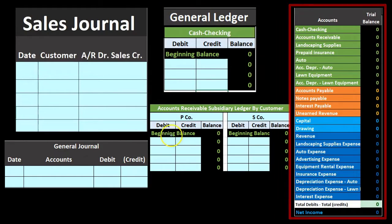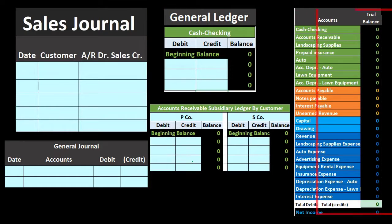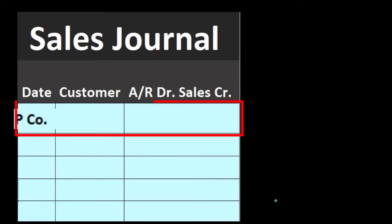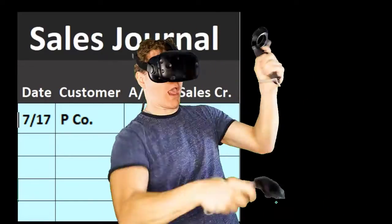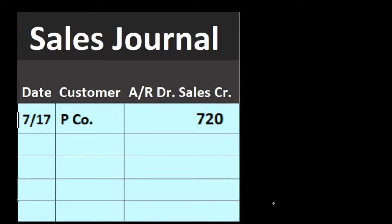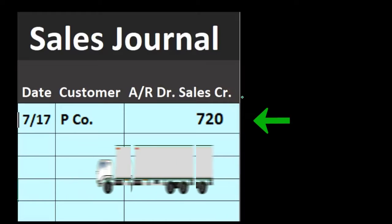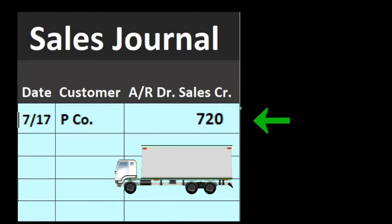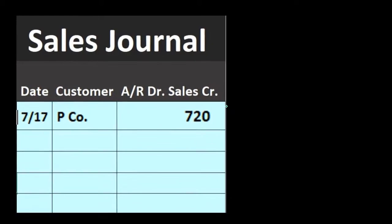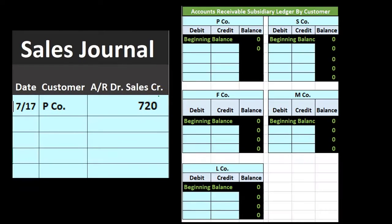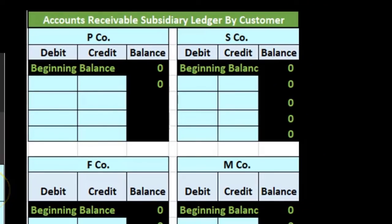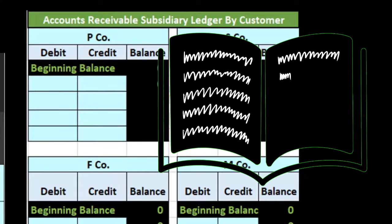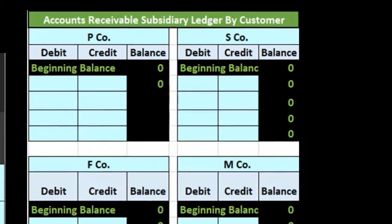Let's take a look at some transactions. On 7/17, P company made a sale for 720. You can imagine just writing these out in a manual system as you make sales throughout the day. What we are not doing is recording this to the general ledger or making a general journal entry yet. We will do that at the end of the time period when we sum everything up and then record one general journal entry to the general ledger.